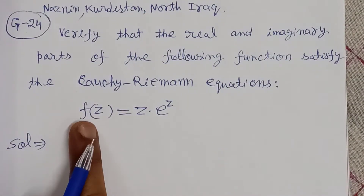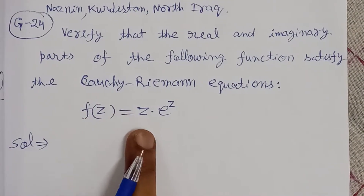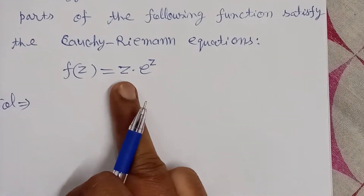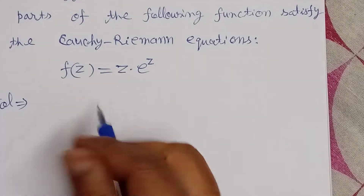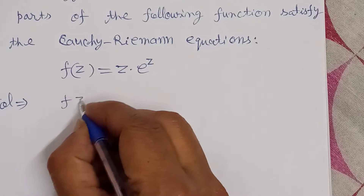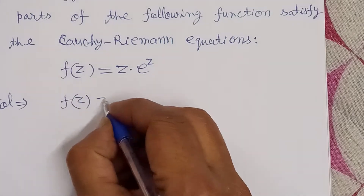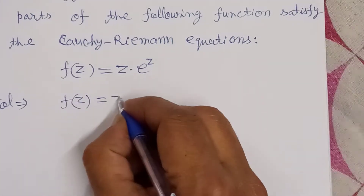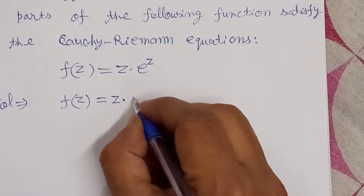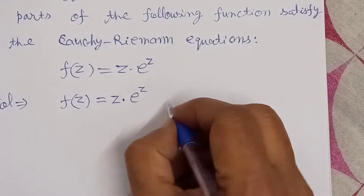The function is f(z) = z · e^z. First of all, we separate the real and imaginary parts of this function z · e^z.